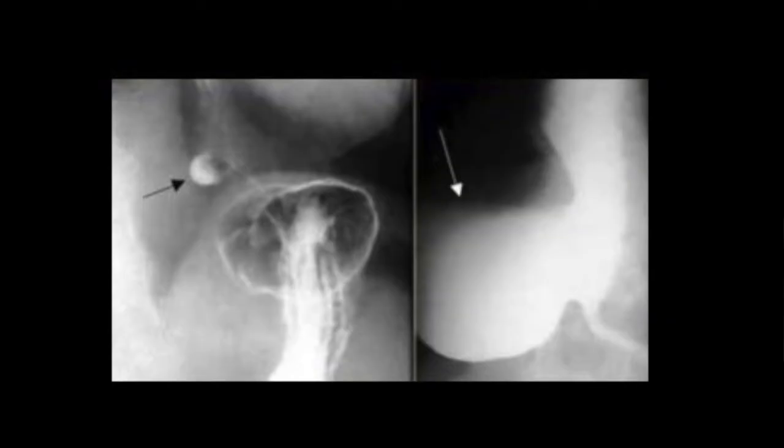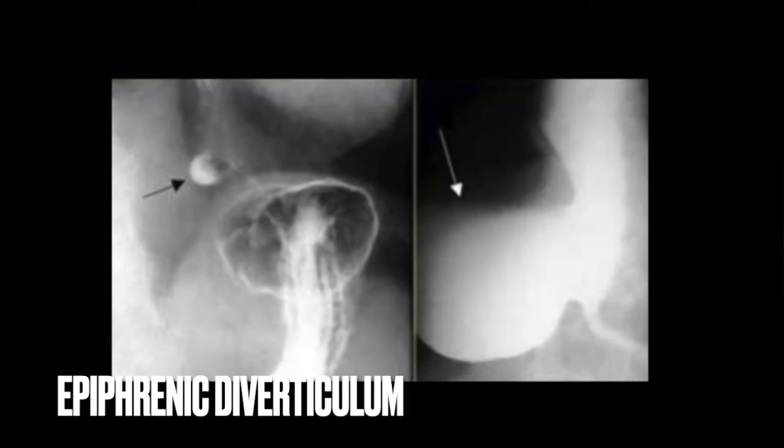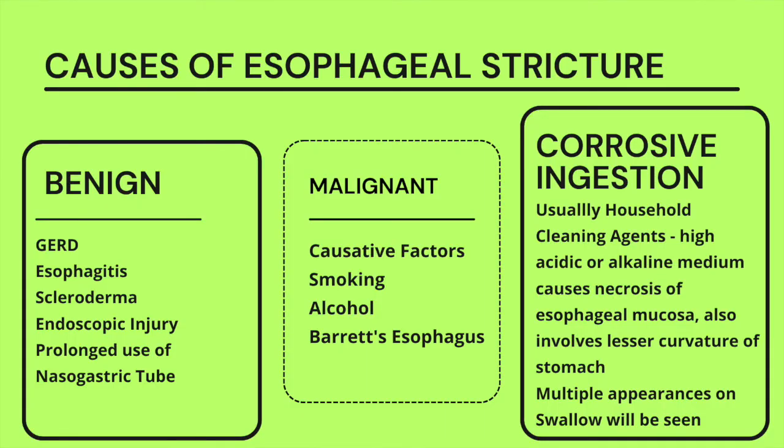Beyond Zenker's, two more types of esophageal diverticula must be recognized: the epiphrenic diverticulum, occurring just above the GE junction, and the traction diverticulum, seen at the mid-esophageal level around the carina. Traction diverticula are associated with tuberculosis or pleural and lung lesions that pull on the esophagus, causing this small mid-esophageal diverticulum.